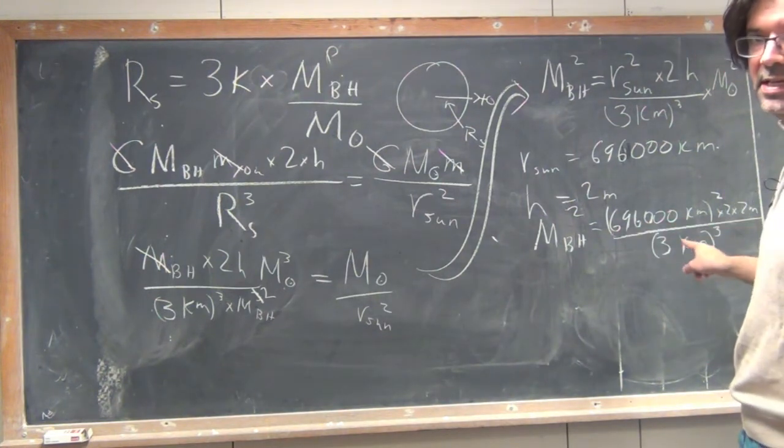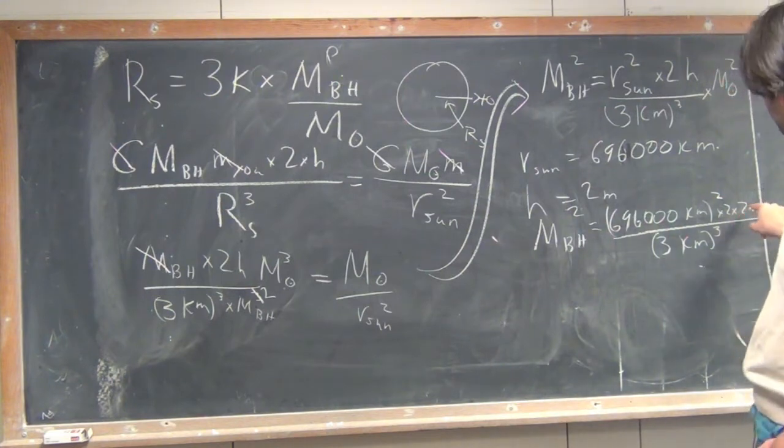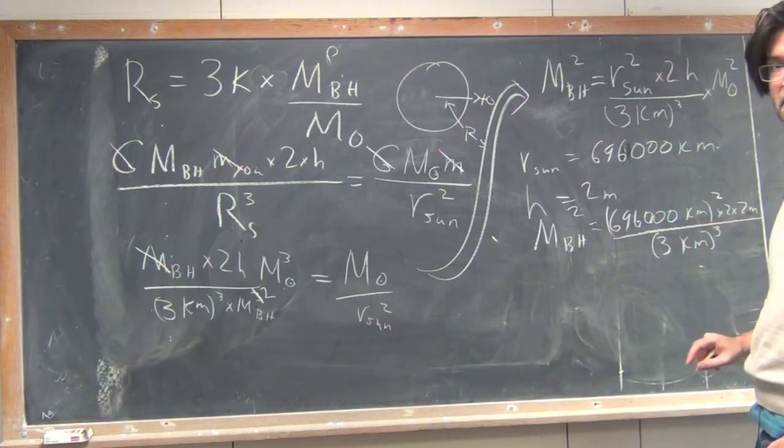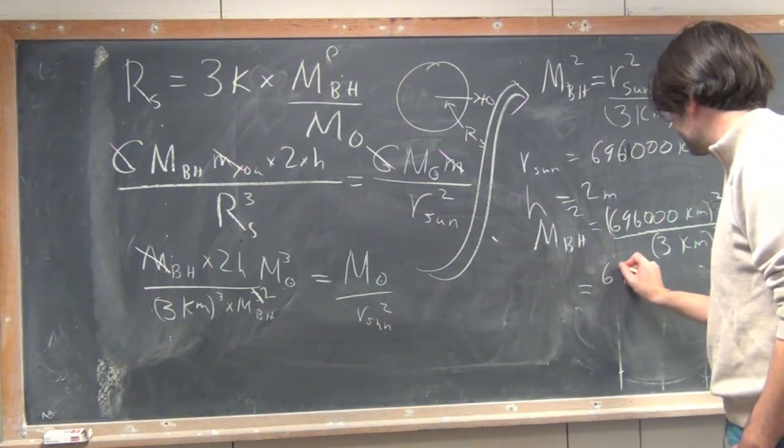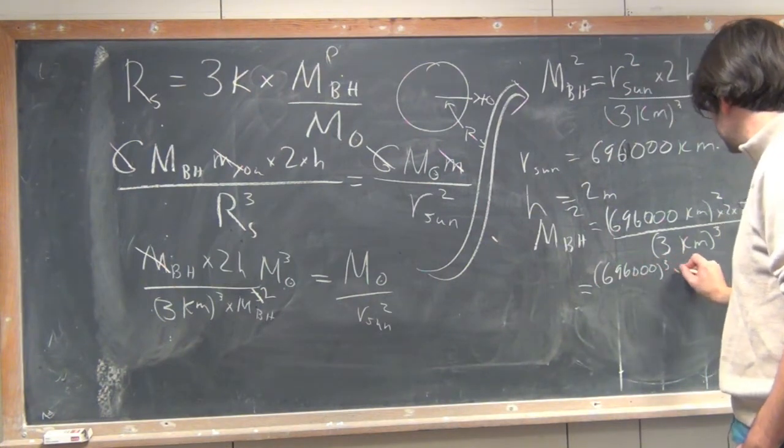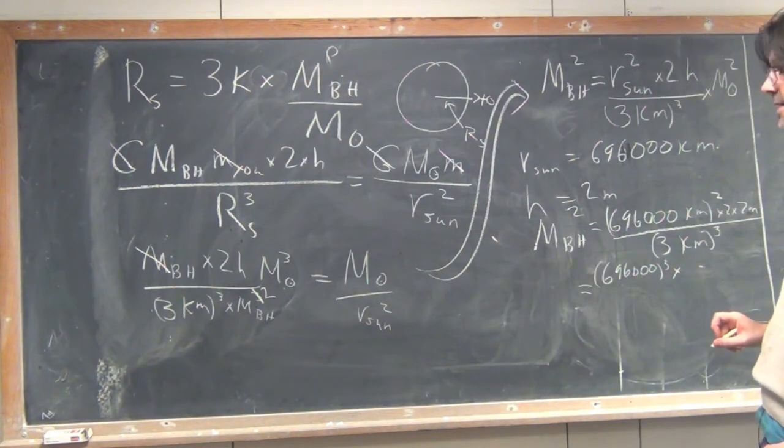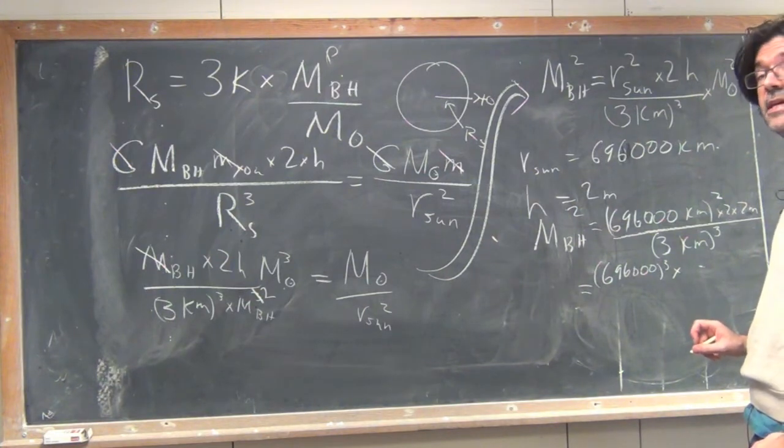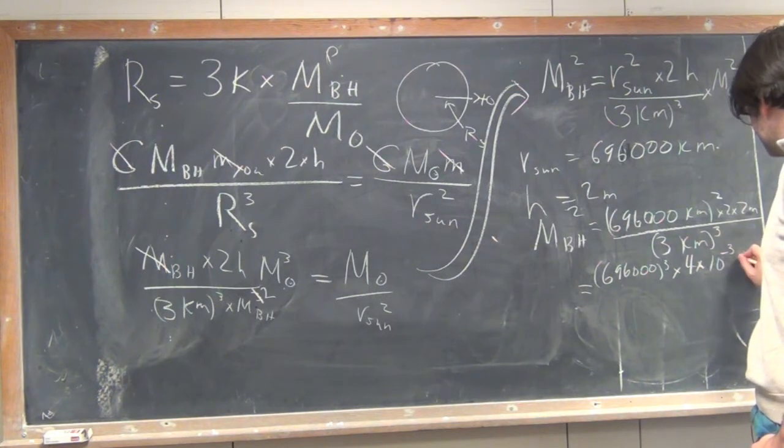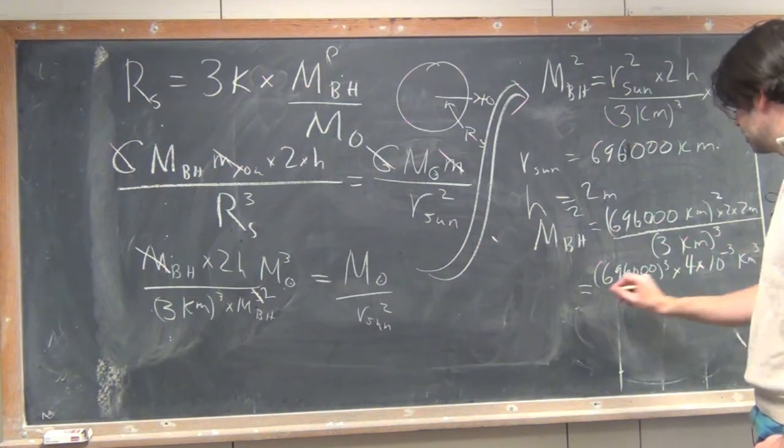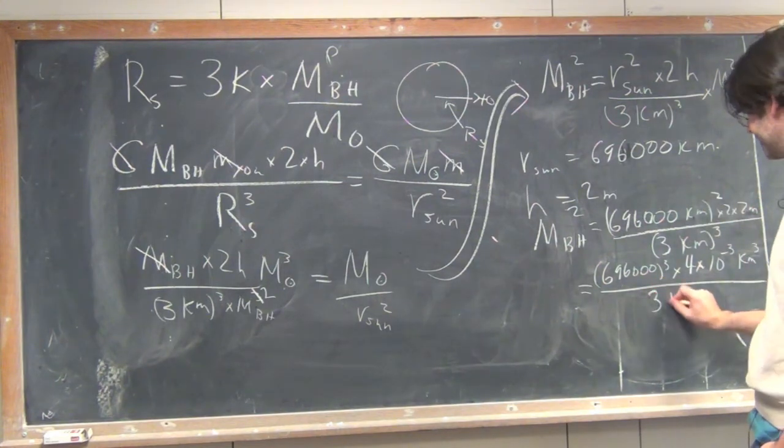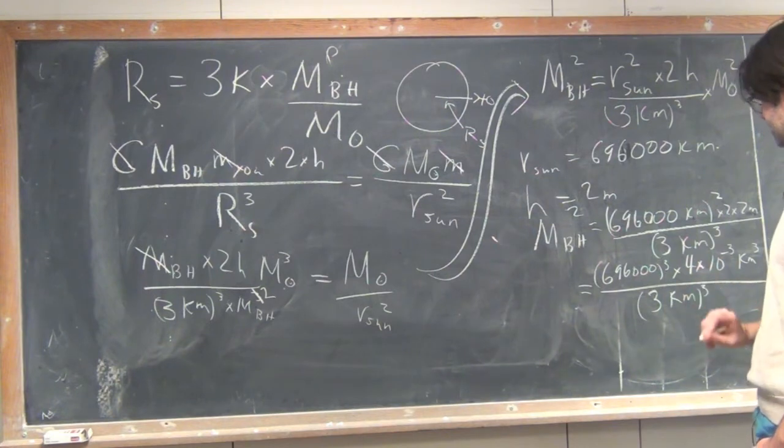So, before I finish this equation, I need to be a little careful because the height here is in meters. All these other units are in kilometers, so I need to convert that meter into kilometers. So, 2 meters in kilometers is equal to 2 times 10 to the minus 3 meters. So, I have overall 4 times 10 to the minus 3 kilometers all in the numerator. I've pulled that kilometer squared out. I've converted this meter into kilometers. And I have 3 kilometers cubed in the denominator.